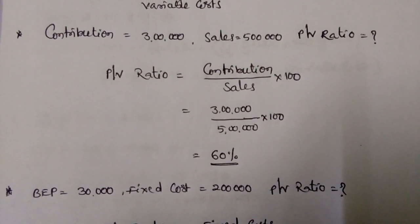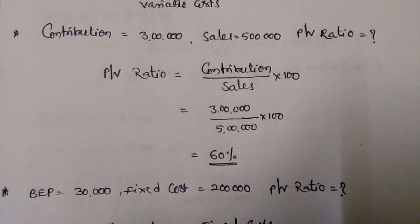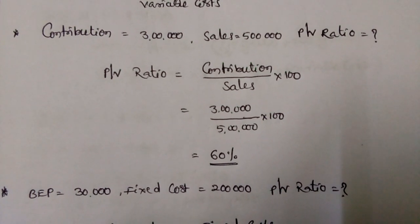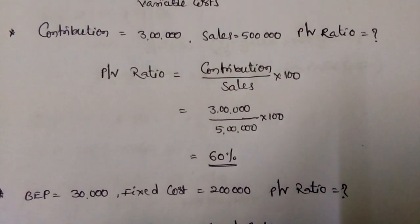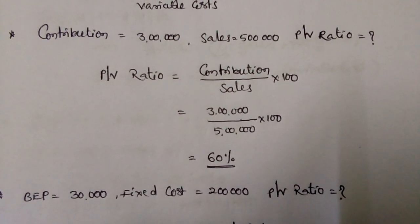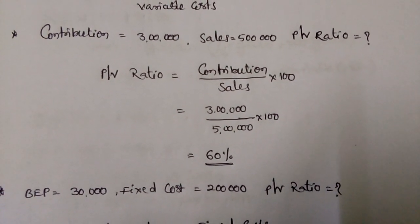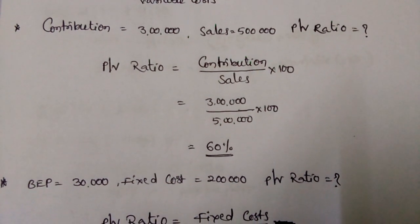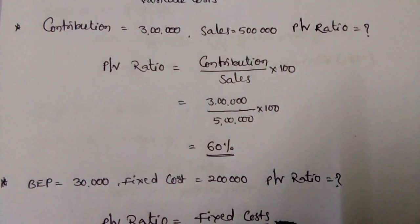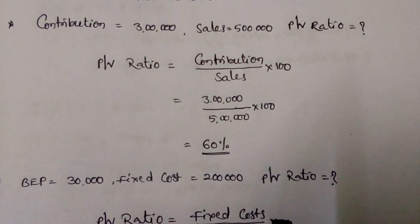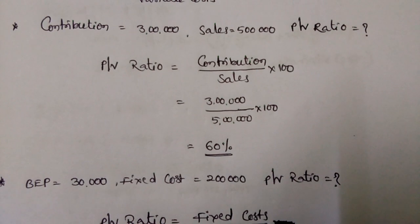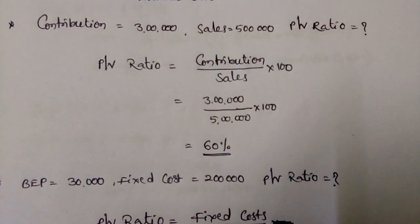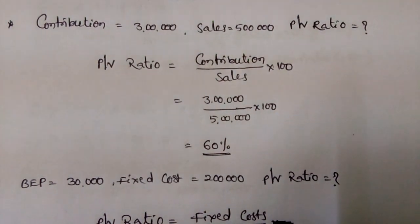Here, small problem: Contribution is 3 lakhs, Sales is 5 lakhs, then calculate PV Ratio. So PV Ratio is Contribution by Sales into 100, then 3 lakhs by 5 lakhs into 100, that is 60%.